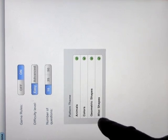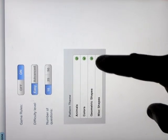Pattern theme: animals, colors, geometric shapes, or miscellaneous shapes. You can click on any of these to turn them off. So, for example, if we leave it on animals.